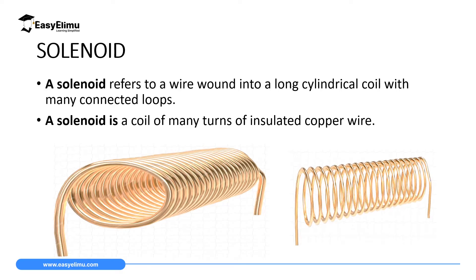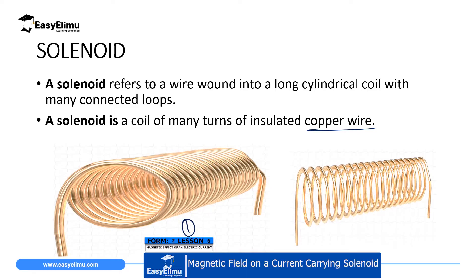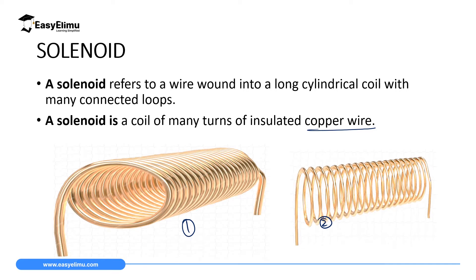A solenoid can be defined in two different ways. First, it is a wire wound into a long cylindrical coil with many connected loops. Alternatively, a solenoid is a coil of many turns of insulated copper wire. On screen, the first and second diagrams are perfect examples of a solenoid. In the first diagram the turns are almost in contact with each other.